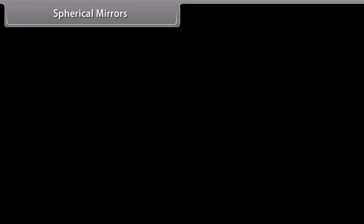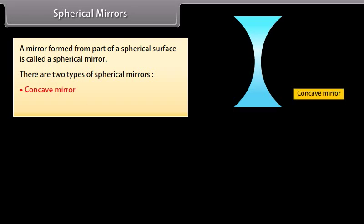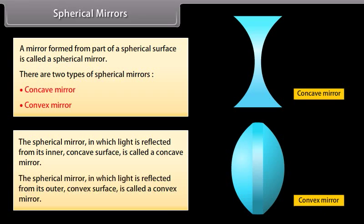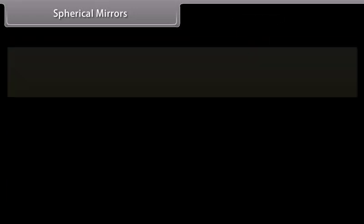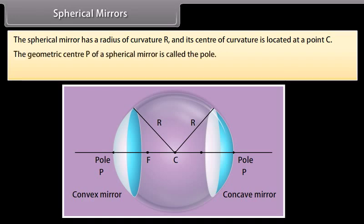A mirror formed from part of a spherical surface is called a spherical mirror. There are two types: a concave mirror, in which light is reflected from its inner concave surface, and a convex mirror, in which the light is reflected from its outer convex surface. The spherical mirror has a radius of curvature R, and its center of curvature is located at point C. The geometric center P of a spherical mirror is called the pole.